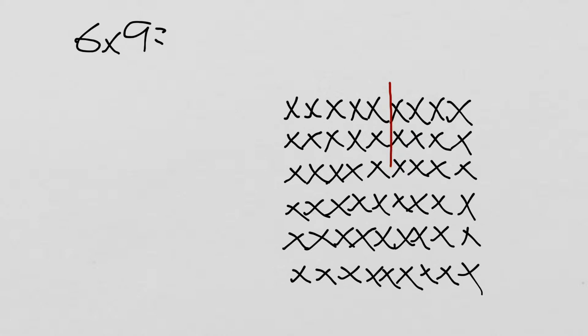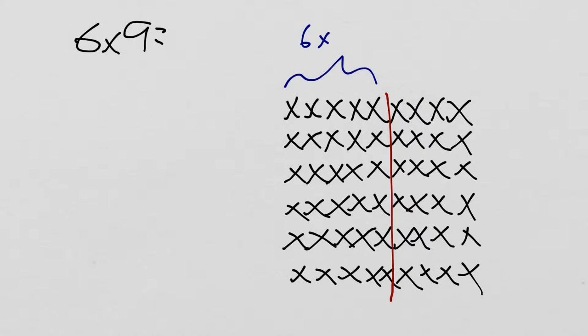The first one that we're going to look at is a break-apart strategy. Using 5s always makes things easier, so I'm going to break this array into two parts. So this array now has two parts. Instead of it being 6 times 9, I've broken it so that instead of having 9 across, I have 6 times 5 and this part is 6 times 4.